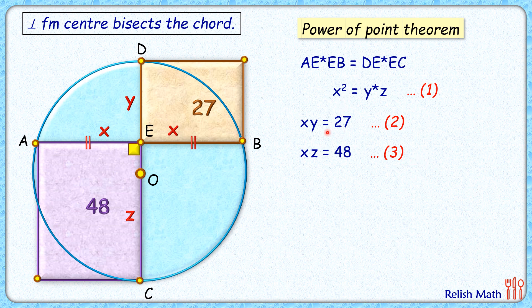Now we have three equations in three variables. To solve it, let's first multiply equations two and three. So the left-hand side will be x²yz. The right-hand side will be 27 times 48, which is 1296. Now we know from equation one that yz = x². So placing it here, we get the left-hand side as x² times x², or x to the power 4. The right-hand side is 36 squared, or 6 to the power 4.